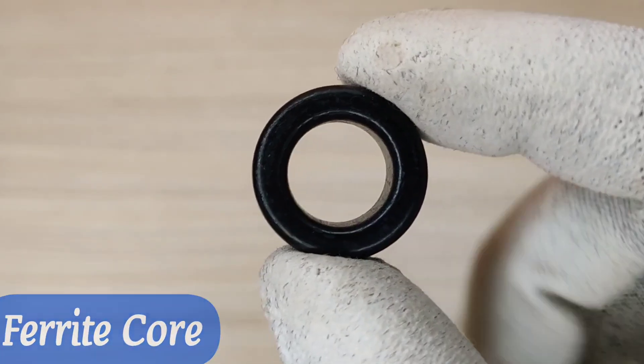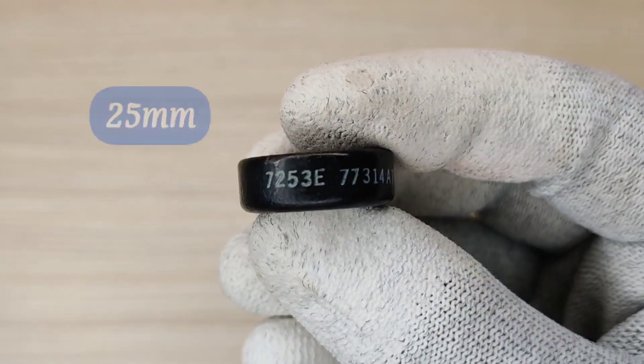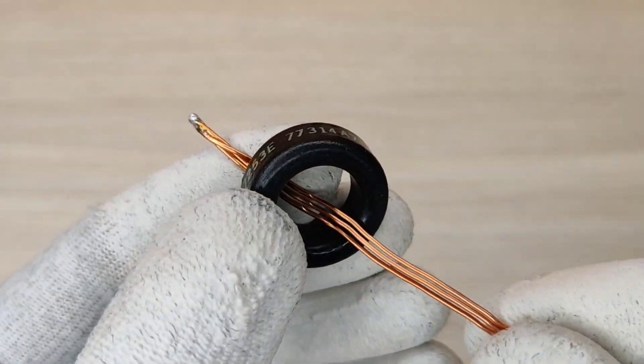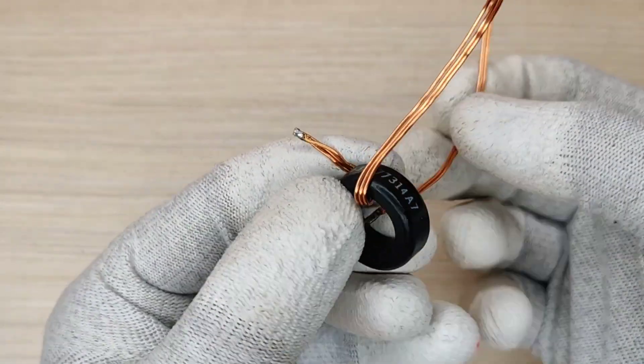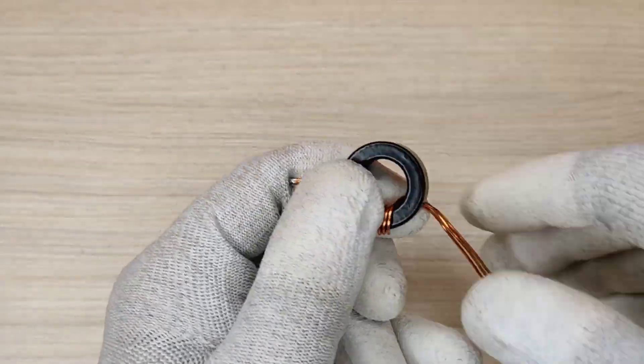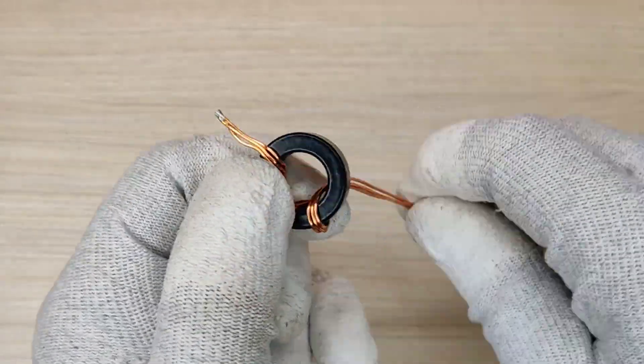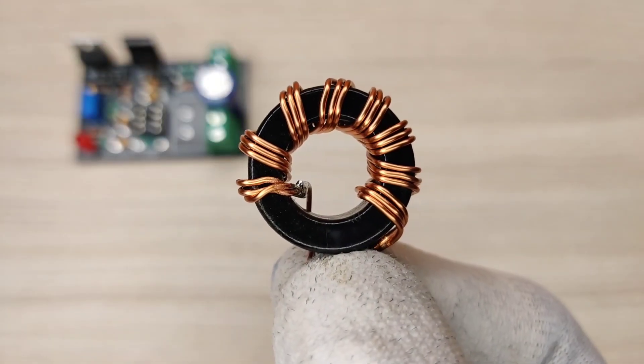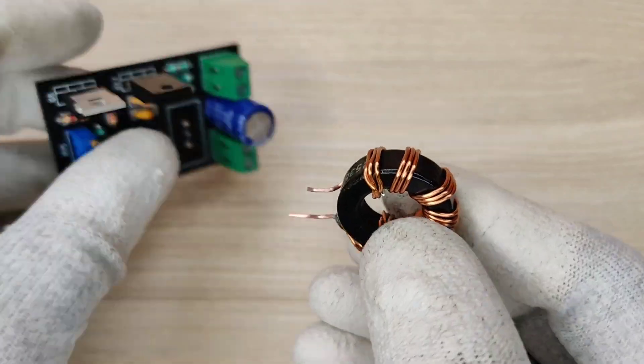Now I use the ferrite core of 25mm for making inductor. I put together three pieces of 1mm copper enamel wire and wound seven turns on this ferrite core. And inductor looks something like this. Now solder the inductor at its place.